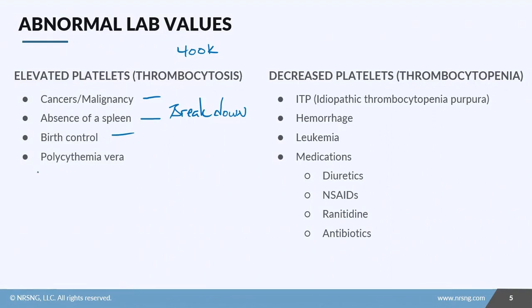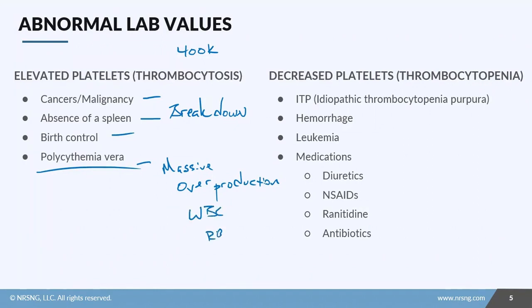Another condition associated with elevated platelets is polycythemia vera — an uncommon type of bone marrow cancer that causes massive overproduction of cells, including white blood cells and red blood cells, which in turn affects hemoglobin and hematocrit. Treatment involves bloodletting — the removal of blood through phlebotomy — to decrease overall blood volume, since the blood becomes very thick and viscous. It can also be treated through adequate hydration and certain medications.